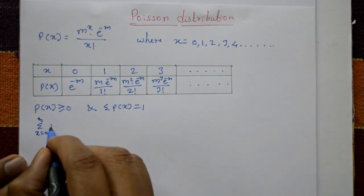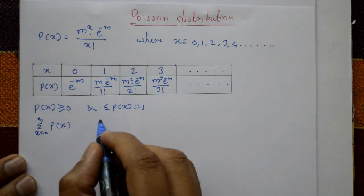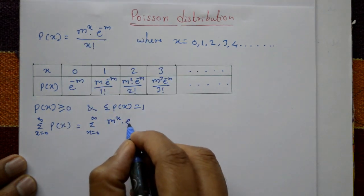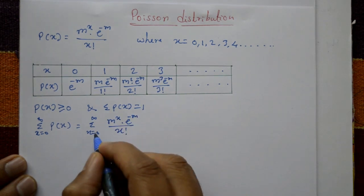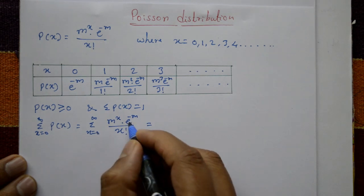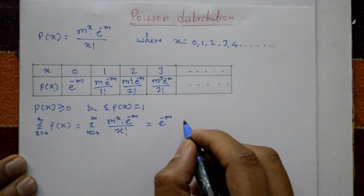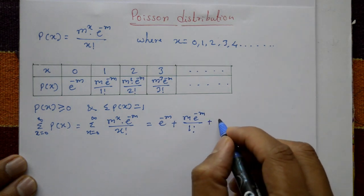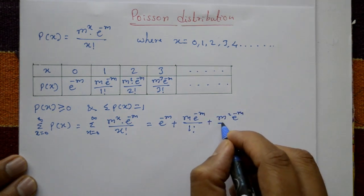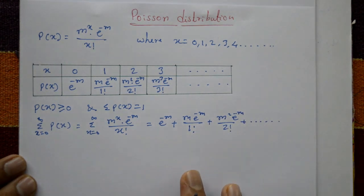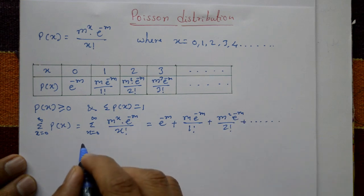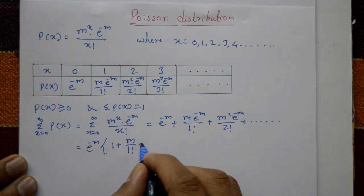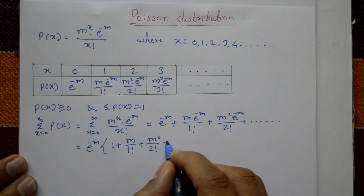Now to show the second condition: taking the summation from x = 0 to infinity of P(x) = m^x * e^(-m) / x!. Substituting x = 0 gives e^(-m), x = 1 gives m * e^(-m) / 1!, x = 2 gives m² * e^(-m) / 2!, and so on. Factoring out the common term e^(-m), we get e^(-m) times (1 + m/1! + m²/2! + m³/3! + ...).